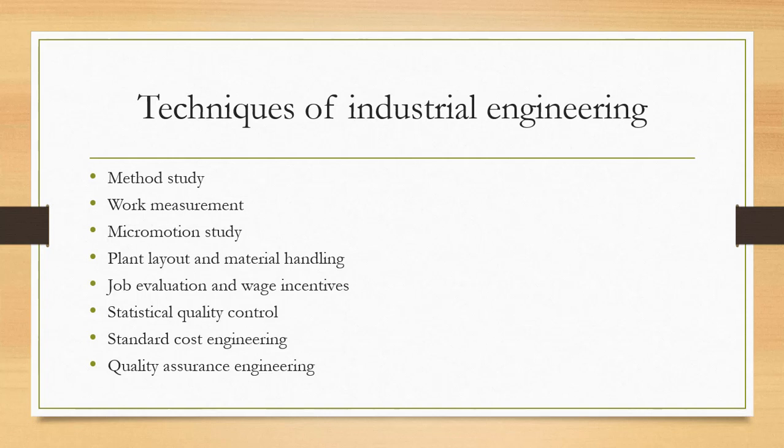To improve the efficiency of the production system, we will study different techniques like method study, work measurement, micro-motion study, plant layout and material handling, job evaluation and wage incentives, statistical quality control, standard cost engineering, and quality assurance engineering. These techniques all involve improving the production rate and quality of the product.